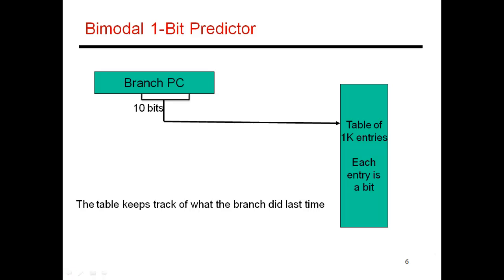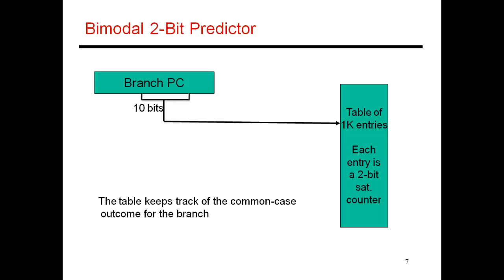So far, we've designed this basic 1-bit bimodal predictor and then a 2-bit bimodal predictor. In both of these cases, I'm using about 10 bits of branch PC to come up with a number between 0 and 1,023, which picks out an entry in this table. And each entry in the table, well, in this case,